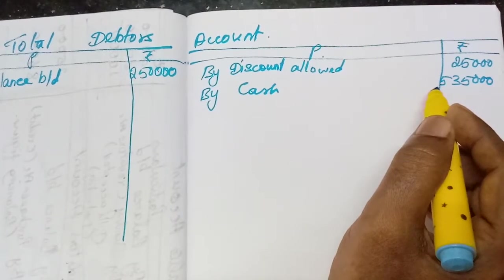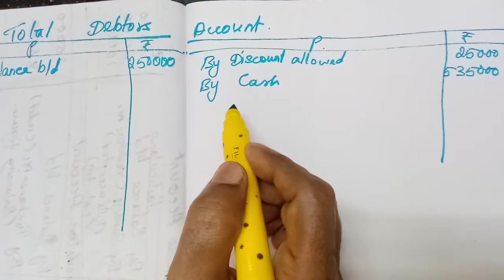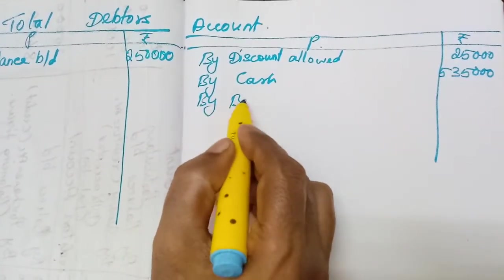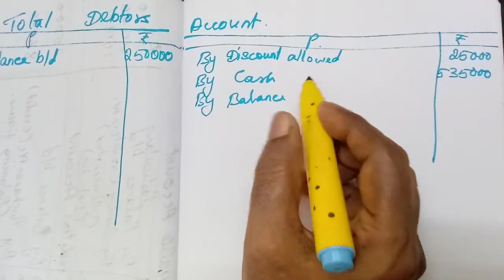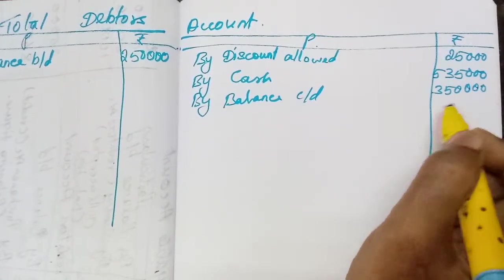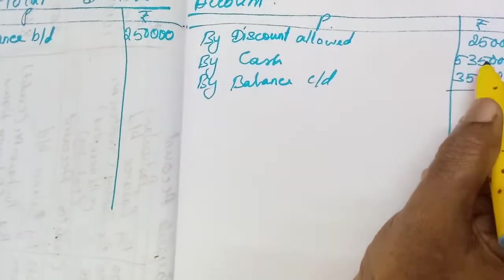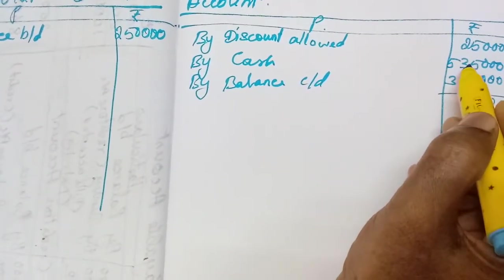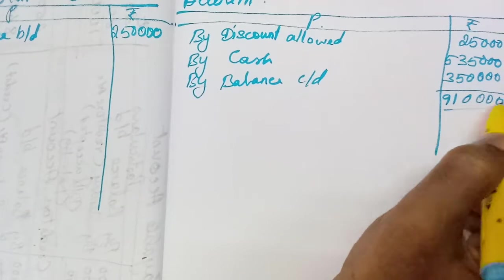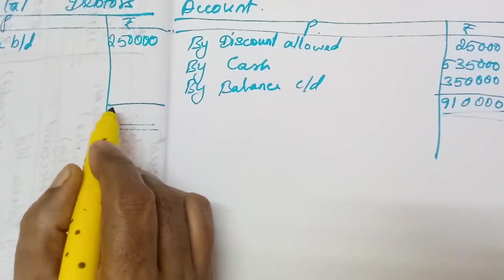Sundry expenses and capital — those items are done. Now write the closing balance: 'By balance carry down: 3,50,000.' All items have been entered. Now balance it. The debit side total comes to 9,10,000. Draw double lines and write the same total on the credit side: 9,10,000.